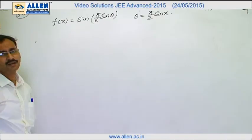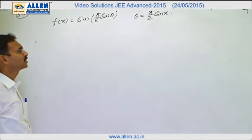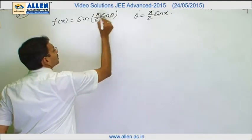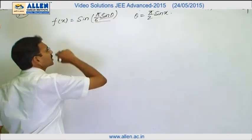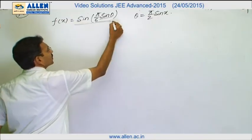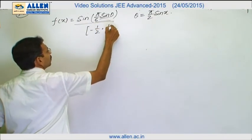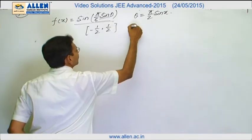Now sine x lies from minus 1 to 1, therefore the range of theta is minus pi by 2 to pi by 2, therefore the range of sine theta is minus 1 to 1. So the range of this is minus pi by 6 to pi by 6, therefore the range of this expression will be minus half to half. So option a is correct, a is correct.